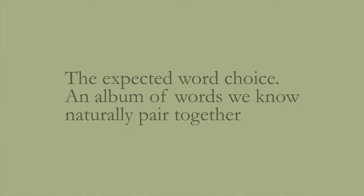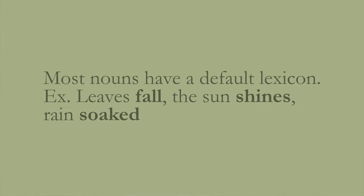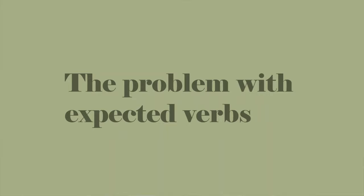Specifically, we're going to be talking about default lexicon — a term I learned last year. Default lexicon is the expected word choice; it's an album of words we know naturally paired together. Most nouns have a default lexicon — for example, leaves fall, the sun shines, the rain soaked. Now, you don't always need to use very specific verbs, and in some instances it'll be better if you don't. You don't want to convolute your prose in unnecessary ways by adding confusing verbs everywhere.